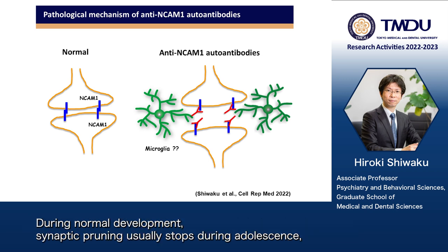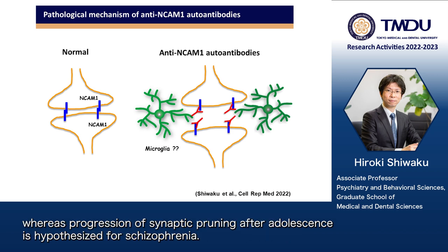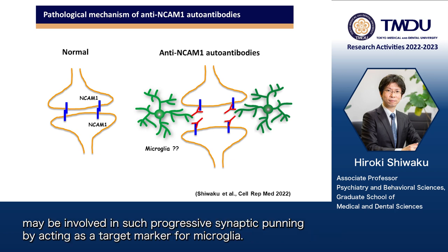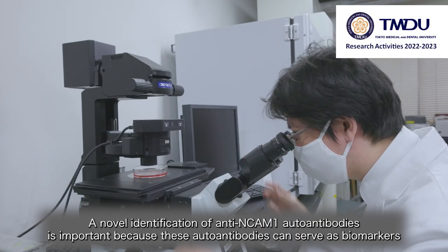Such synaptic pruning has been reported during development, although it is not known how such targeted pruning is regulated. During normal development, synaptic pruning usually stops during adolescence, whereas progression of synaptic pruning after adolescence is hypothesized for schizophrenia. Autoantibodies against synaptic molecules, including NCAM1, may be involved in such progressive synaptic pruning by acting as a target marker for microglia.